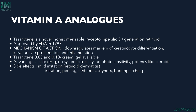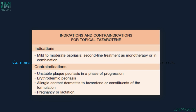Vitamin A analogues: tazarotene is the vitamin A analog, FDA approved in 1997. It downregulates keratinocyte differentiation and proliferation. Tazarotene is available as 0.05-0.1%. It is safe, with no systemic toxicity, no photosensitivity, and has potential steroid-sparing effects. Side effects include irritation, itching, peeling, erythema, dryness, and burning. It is used in mild to moderate psoriasis and is not used in unstable erythrodermic and pustular psoriasis, allergic dermatitis, or pregnancy and lactation.